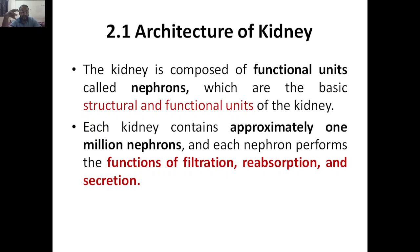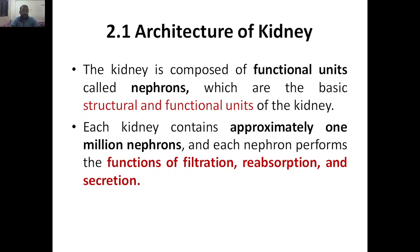For example, renin — which we discussed in the previous class — will be secreted by the kidney. So the kidney has filtration, reabsorption, and secretion. Each kidney has approximately 1 million, that means almost 10 lakh nephrons.